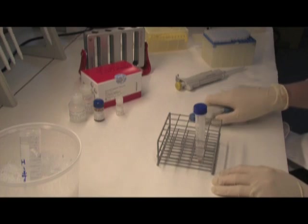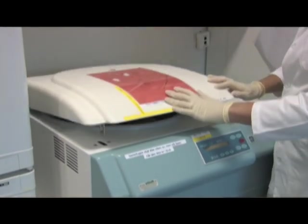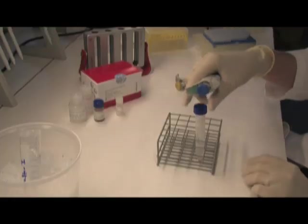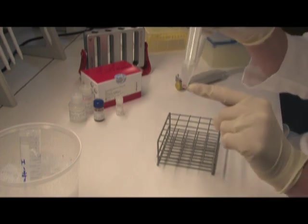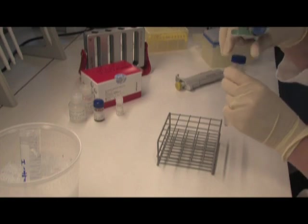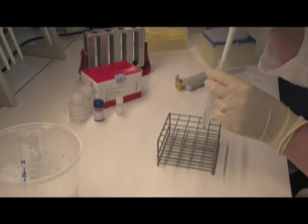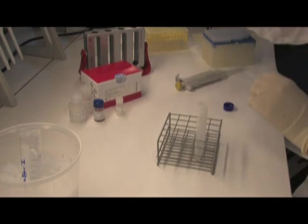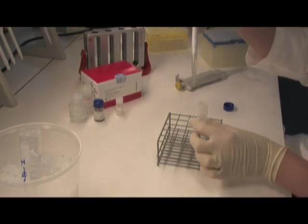Add 2 mls cold isolation buffer to wash cells followed by centrifugation for 8 minutes at 350 G. After centrifugation, you should see a nice pellet of cells. Remove and discard the supernatant. Add 1 milliliter cold isolation buffer to the cell pellet and gently resuspend.